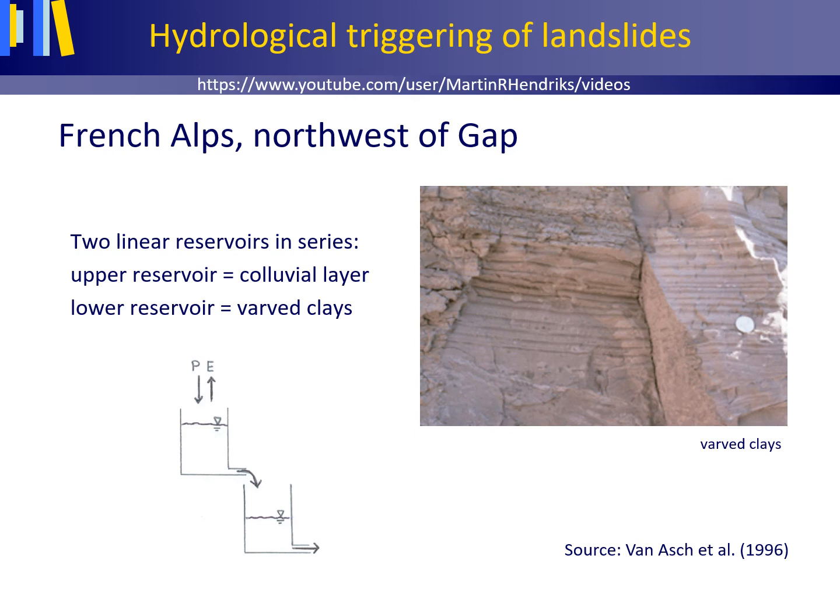Varved clays northwest of Gap in the French Alps, as shown here, consist of alternating thin layers of silt and clay. They are formed in former glacial lakes by variations in sedimentation during the various seasons of the year. A colluvial cover is an accumulation of sediment through the action of gravity at the lower parts of slopes.